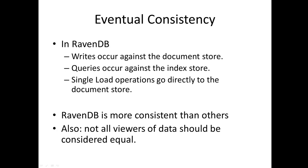The next fundamental is eventual consistency, and I'll focus this around how it works in Raven. Rights occur against a document store. Let's say it's product inventory — I write it in the document store. That write operation will happen asynchronously without slowing down anything else. Other parts of my application that may be querying against the index store at the same time will perform well, not get interrupted by this.